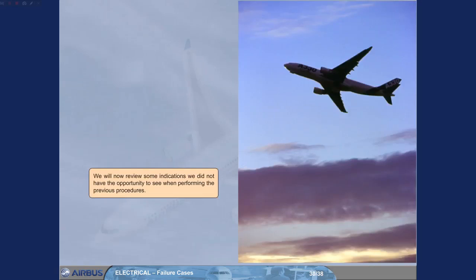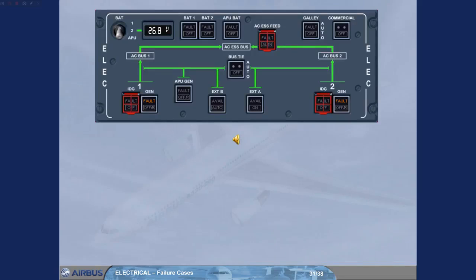We will now review some indications we did not have the opportunity to see when performing the previous procedures. As we have just seen, as a result of the loss of all two main generators, the emergency generator normally runs automatically to power the electrical network. During the emergency generator connection time, the electrical system is powered from the batteries. The approximate flight time on batteries is 30 minutes.